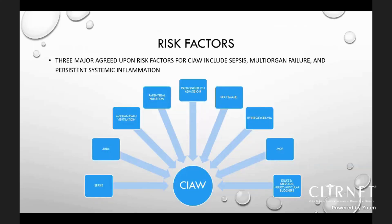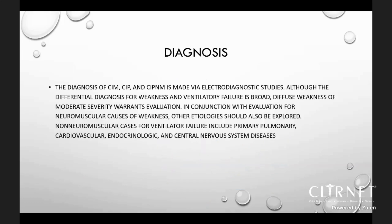Three major agreed-upon risk factors for ICU-acquired weakness include sepsis, multi-organ failure, and persistent systemic inflammation. Additional risk factors include parenteral nutrition, prolonged ICU admission, female gender, hyperglycemia, drugs like steroids and neuromuscular blockers, ARDS, and mechanical ventilation — all are risk factors for critical illness polyneuropathy.